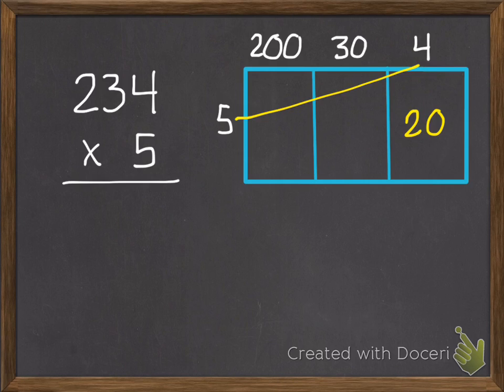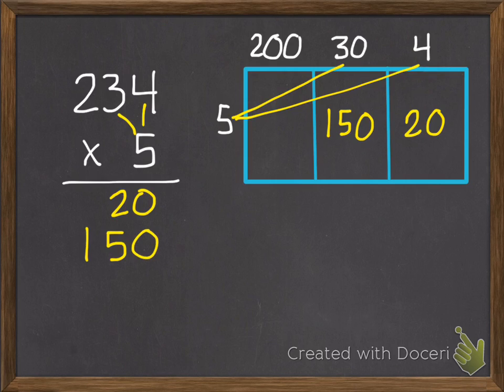If I was doing this over here on the left, I'd do the same thing. Multiply the ones first, five times four is 20. Then I multiply the tens. So five times thirty, five times three is fifteen, and then a zero, so one hundred fifty. If I was doing that on the left, same thing. Five times thirty is one hundred fifty.